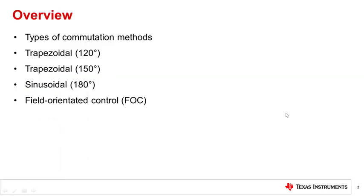In this video, we'll discuss the reasons for choosing a specific commutation method over another, as well as the advantages and disadvantages for the four main commutation methods: trapezoidal 120 degrees, trapezoidal 150 degrees, sinusoidal 180 degrees, and field-oriented control.